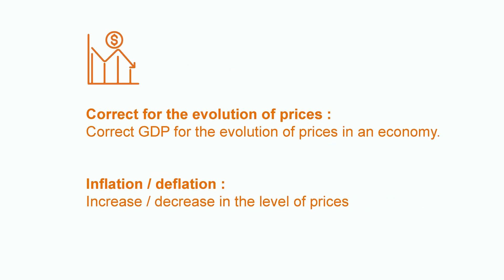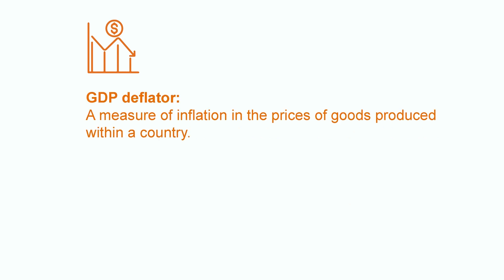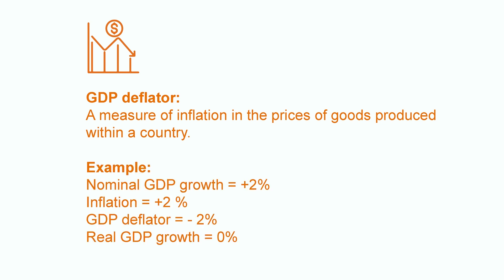Finally, one also needs to correct for the evolution of prices in an economy. Prices can increase — this is inflation. Prices can decrease — this is deflation. In order to do this, one must use a GDP deflator, which is a measure of inflation in the prices of goods produced within a country. For instance, if the GDP growth of a country is equal to 2%, and all prices in the economy increased by 2%, nominally the GDP grew — but did real GDP grow?